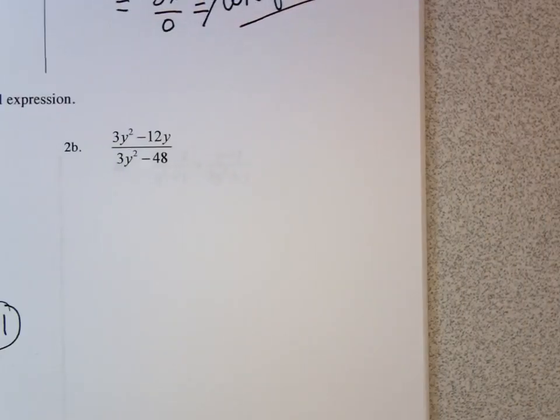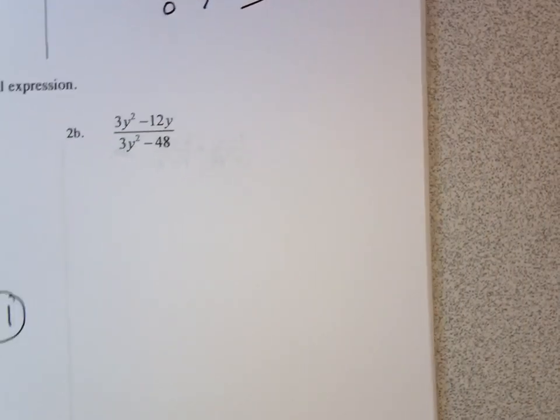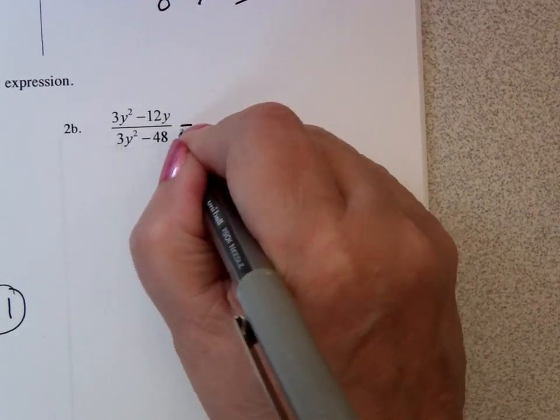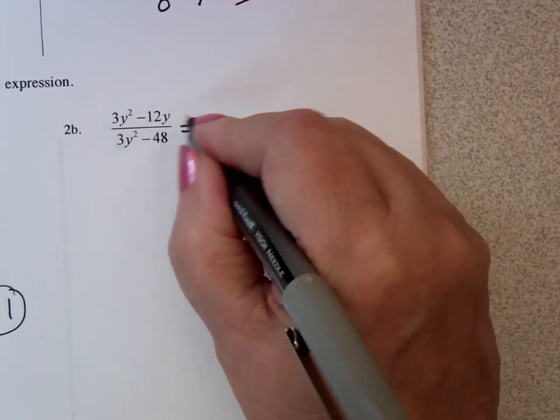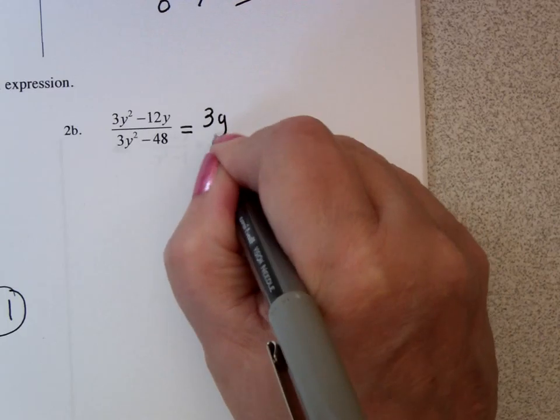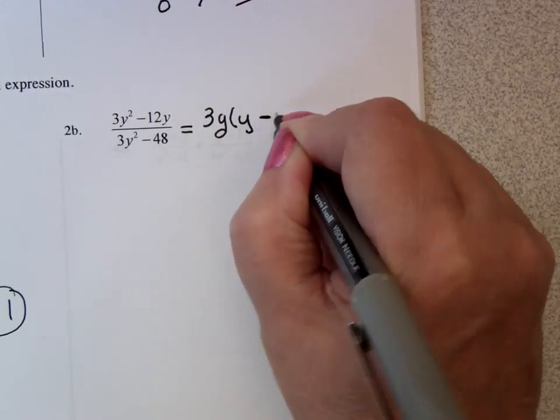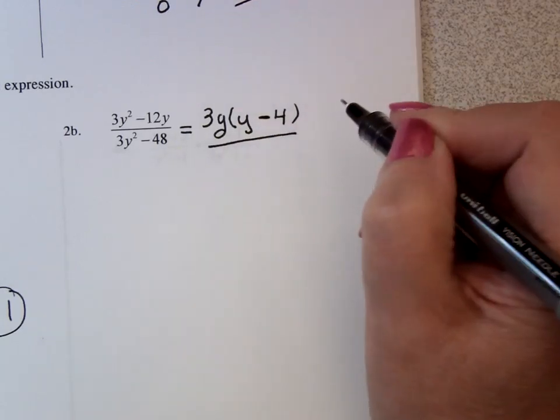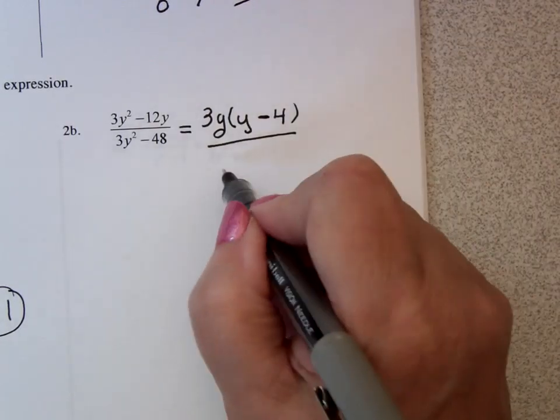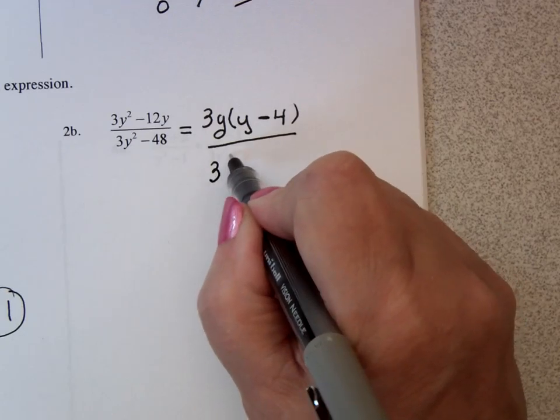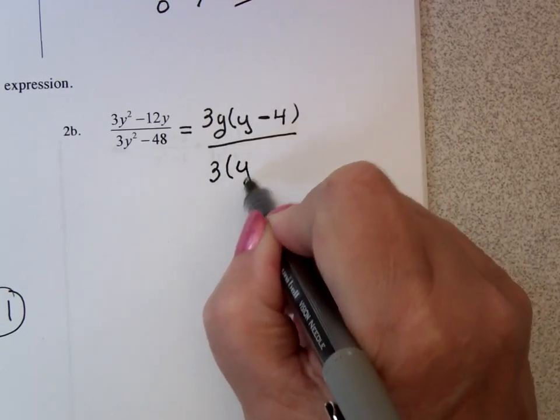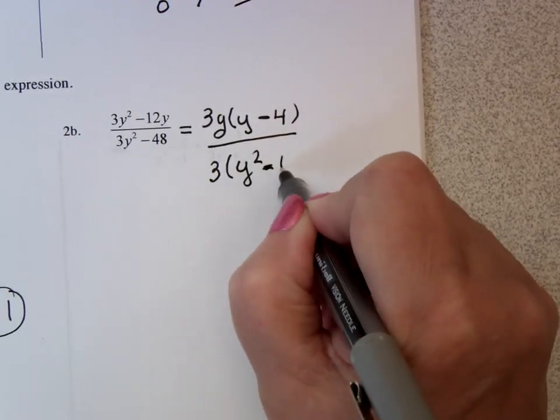On this one, we literally must factor. So I notice in the numerator, I have a greatest common factor of a 3 and a y, which is going to give me y minus 4. And in the denominator, I have just a greatest common factor of 3, which is going to give me y squared minus 16.